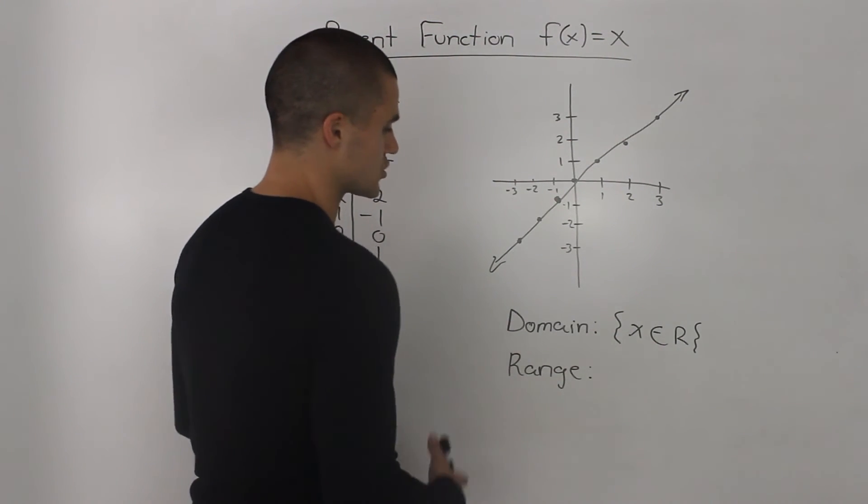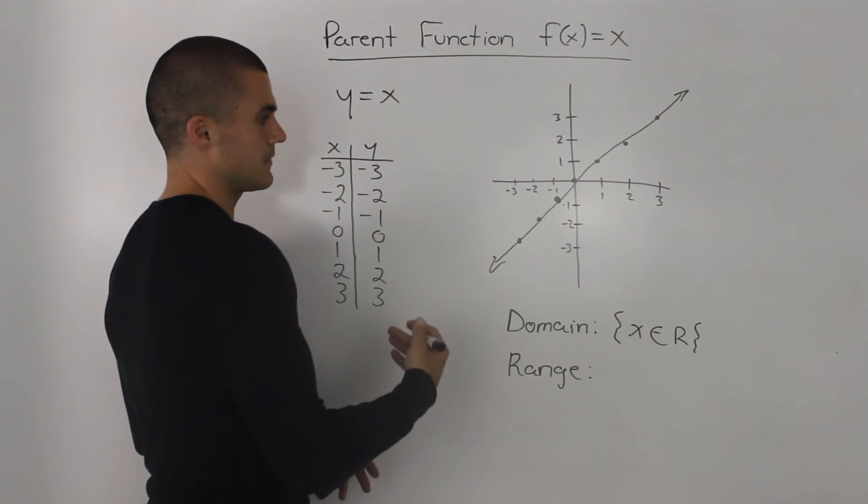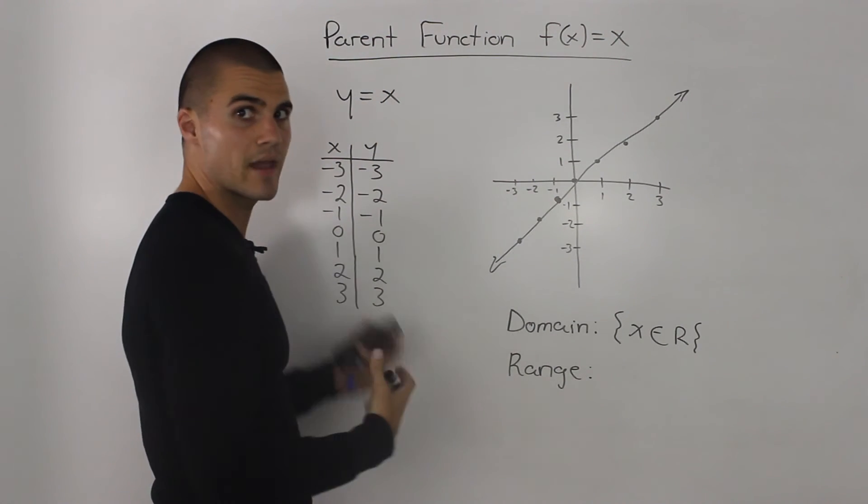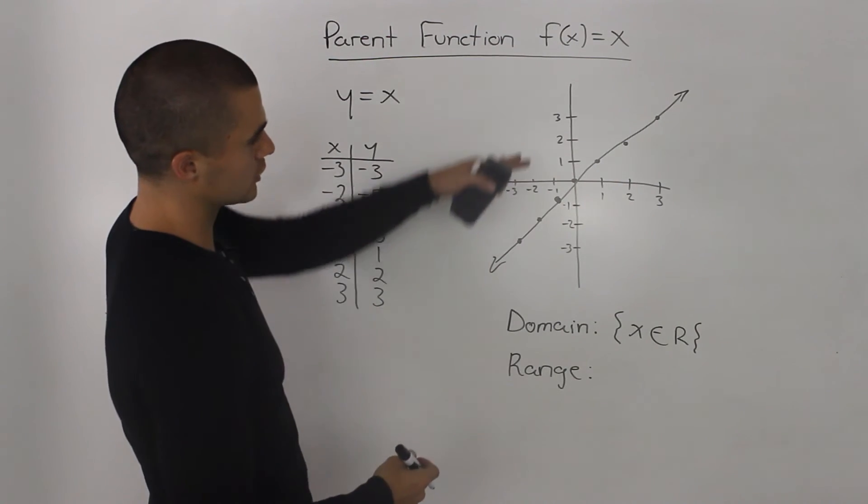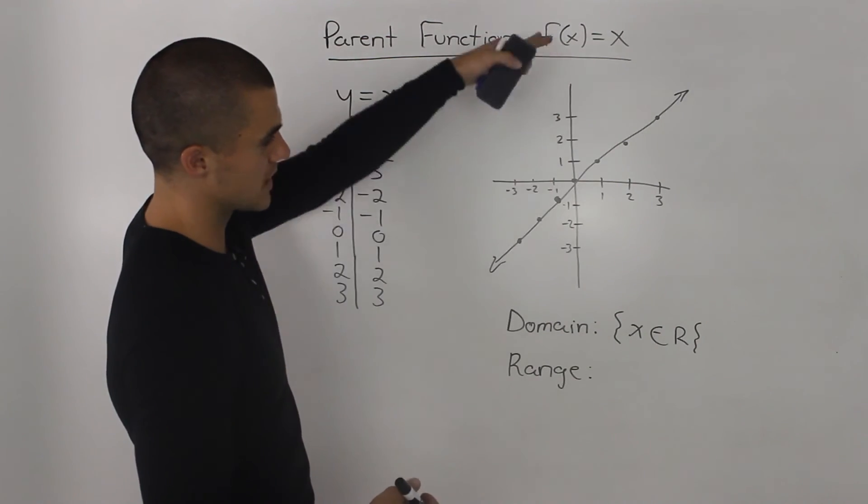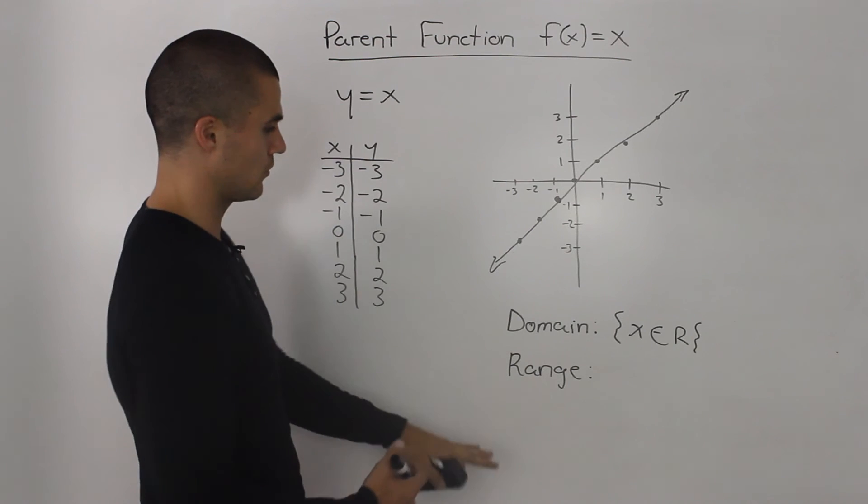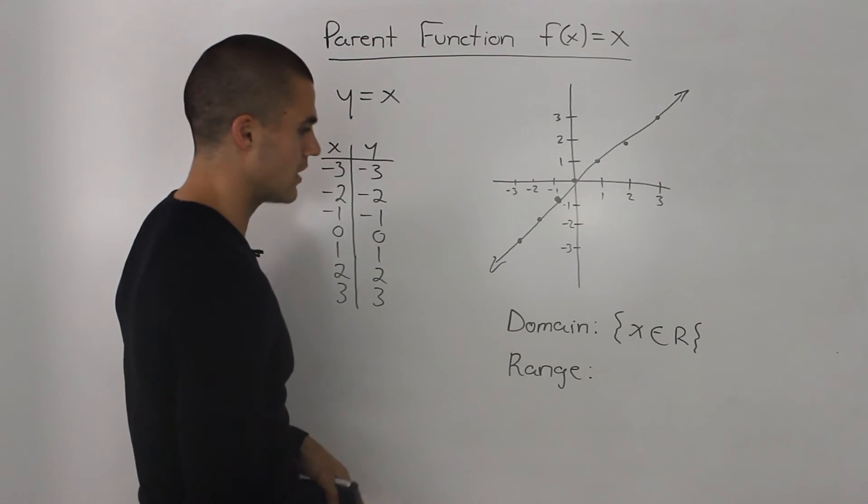Now, what about the range? The range is the values that the dependent variable can take in a relation. And if you look at the graph, the y values can be anything as well, all the way from negative infinity to positive infinity.